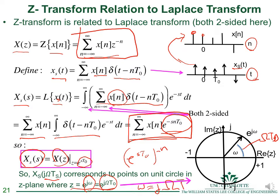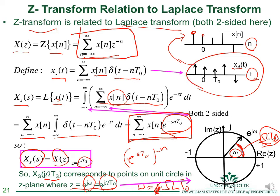The discrete-time frequency ω equals ΩT_0. The Fourier transform, or frequency response of the sampled signal, corresponds to points on the unit circle. The angle of a point on the unit circle with respect to the real axis corresponds to discrete-time frequency ω, which also equals the continuous-time frequency Ω times T_0.